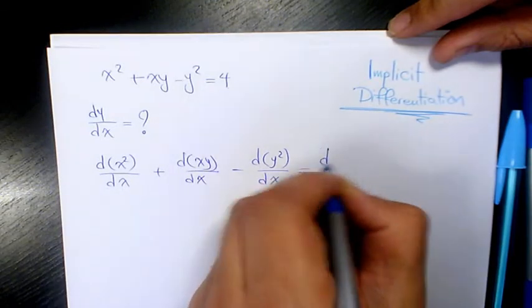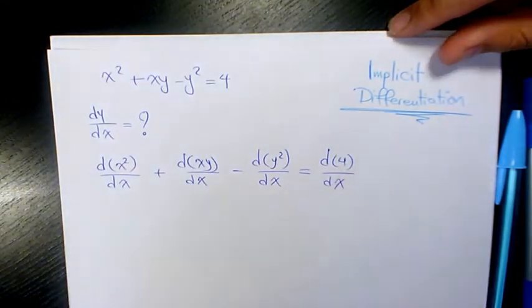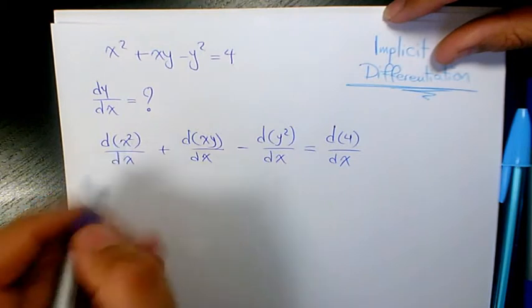...equals the derivative of 4 with respect to x. The derivative of x² is 2x.